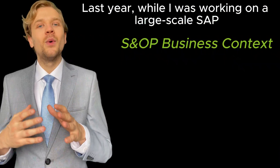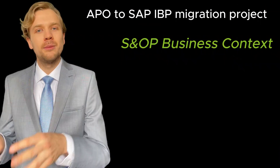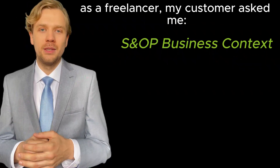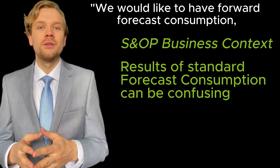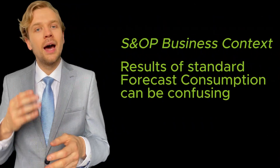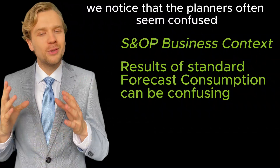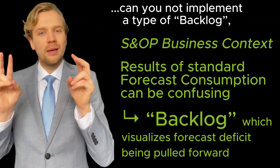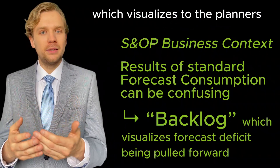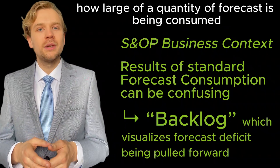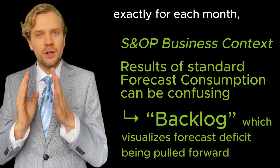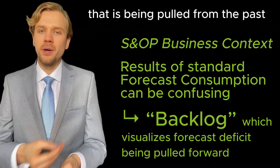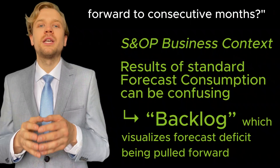Last year, while I was working on a large-scale SAP APO to SAP IBP migration project as a freelancer, my customer asked me: we would like to have forward forecast consumption. However, we noticed that the planners often seem confused about the end results. Can you not implement a type of backlog which visualizes to the planners how large a quantity of forecast is being consumed exactly for each month, in case of the deficit of forecast that is being pulled from the past forward to consecutive months?